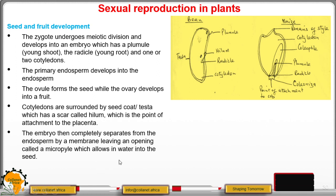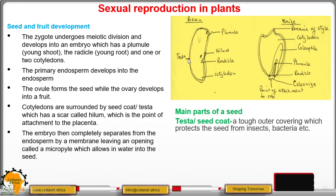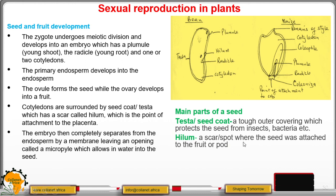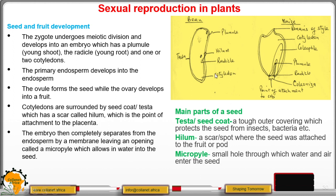Let us quickly look at the main parts of a seed. The testa is the outer covering that protects the inner part of the seed against damage or attack by insects and bacteria. The hilum is the spot where the seed was attached to the fruit or pod. The micropyle is a small hole through which water and air enter the seed. We also have the radicle, which is the embryonic root.